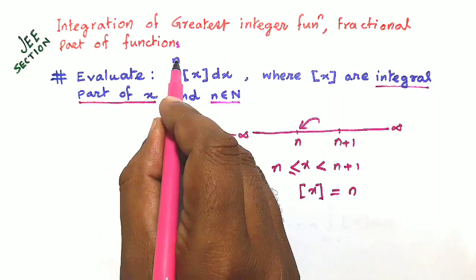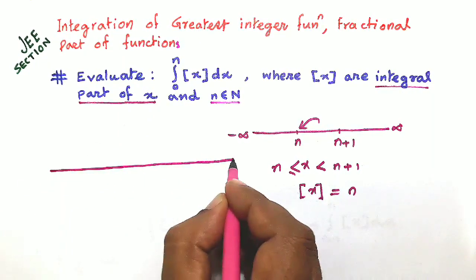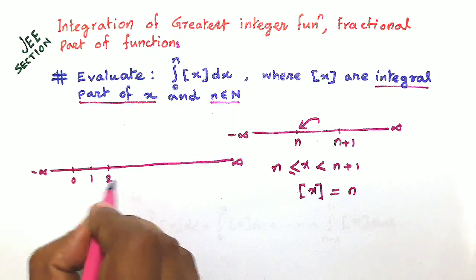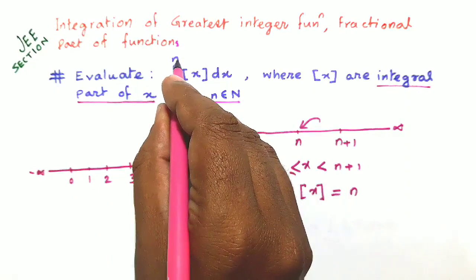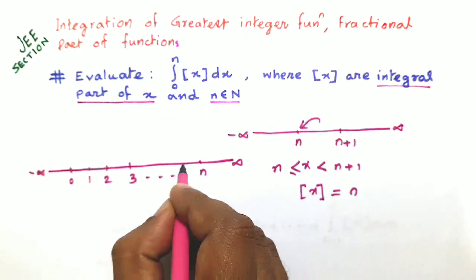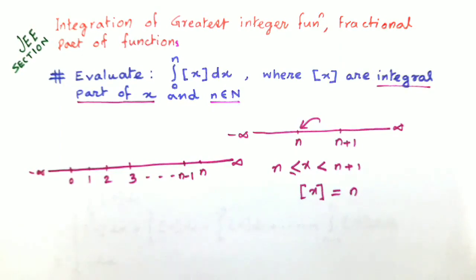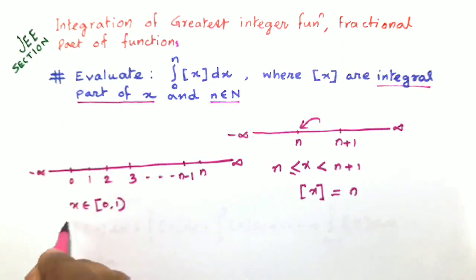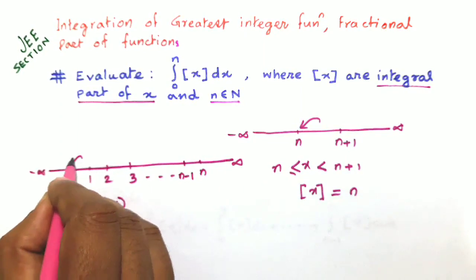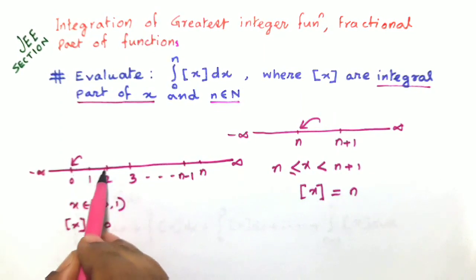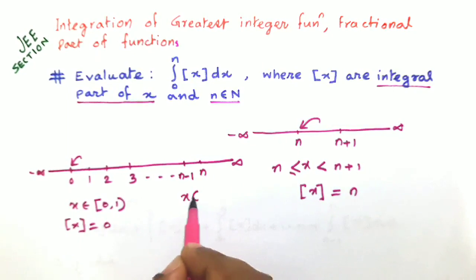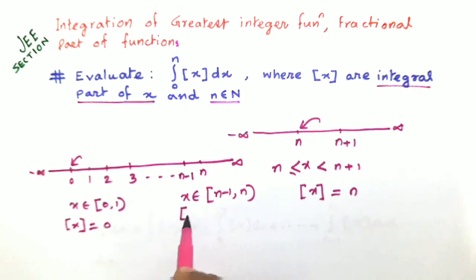Our example gives us integration from 0 to n, which we split into n parts. On the number line from negative infinity to positive infinity, we have 0, 1, 2, 3, and finally the endpoint n with its preceding point n minus 1. When x lies between 0 and 1, the integral part of x is 0. When x lies between 1 and 2, the integral part is 1. When x lies between n minus 1 and n, the integral part of x is n minus 1.